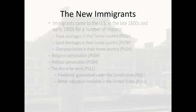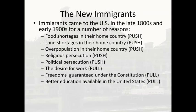Immigrants came to the U.S. in the late 1800s and early 1900s for a number of reasons. There were push factors and pull factors. Push factors included food shortages, land shortages, overpopulation, religious persecution, and political persecution in their home country. Pull factors included job opportunities in the United States, freedom guaranteed under the Constitution, and better education available here.